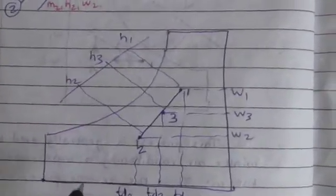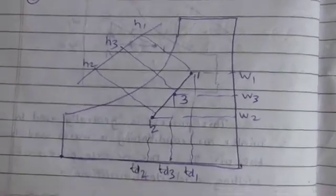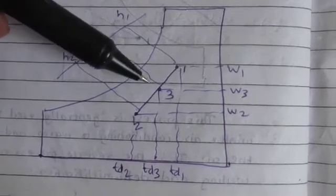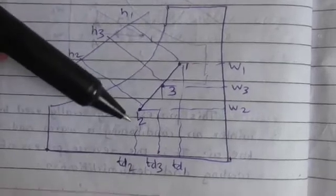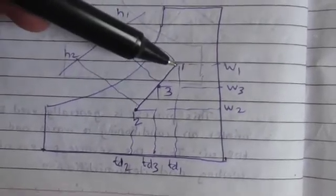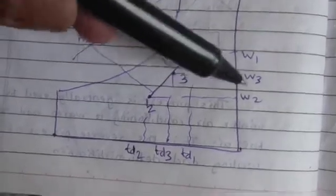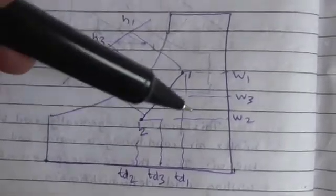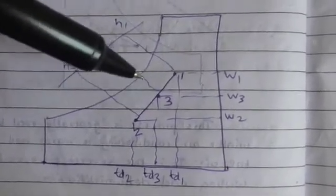When we draw this on a psychrometric chart, we can see that point 3 is the mixing point. Air from stream number one comes downwards and air from stream number two comes upwards, and they mix at point number three, which has certain specific properties. This adiabatic mixing of two streams is shown on the psychrometric chart.